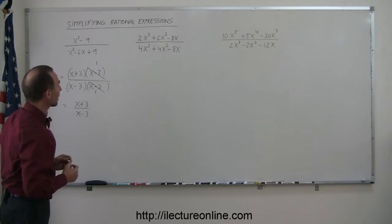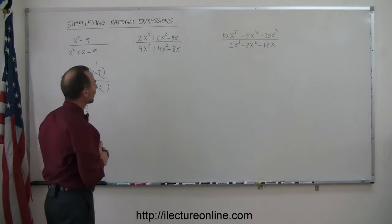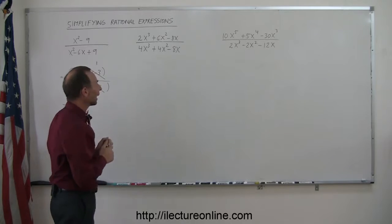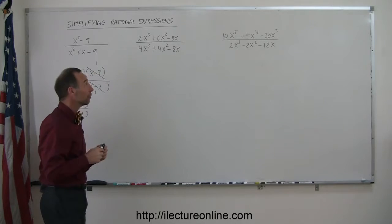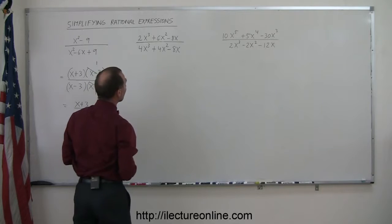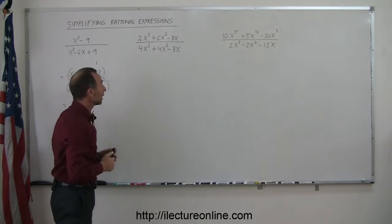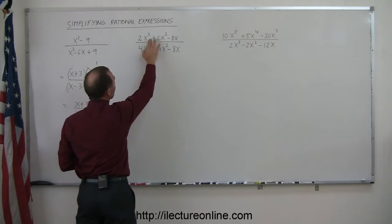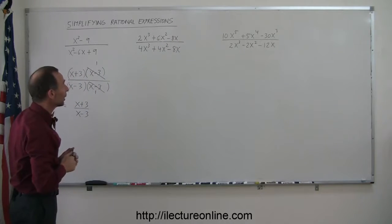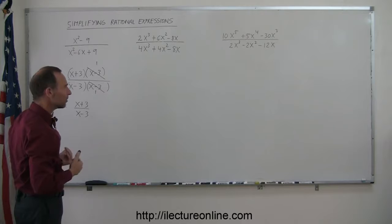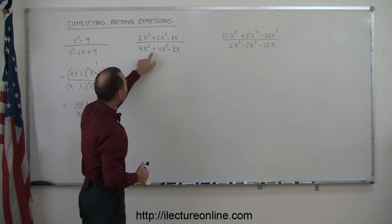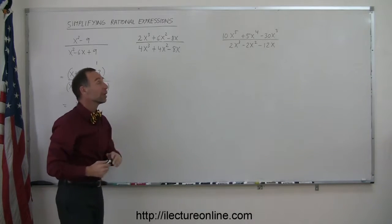For our next example, I realize I can't just regularly factor it as I did before. I need to do something first. I realize I have even coefficients — numerical coefficients in the numerator — so I can factor out a 2. And also, having an x cubed, an x squared, and an x to the first power, I can also factor an x in the numerator. Looking at the denominator, it's the same thing — I can factor out a 4, and it looks like I can also factor an x.